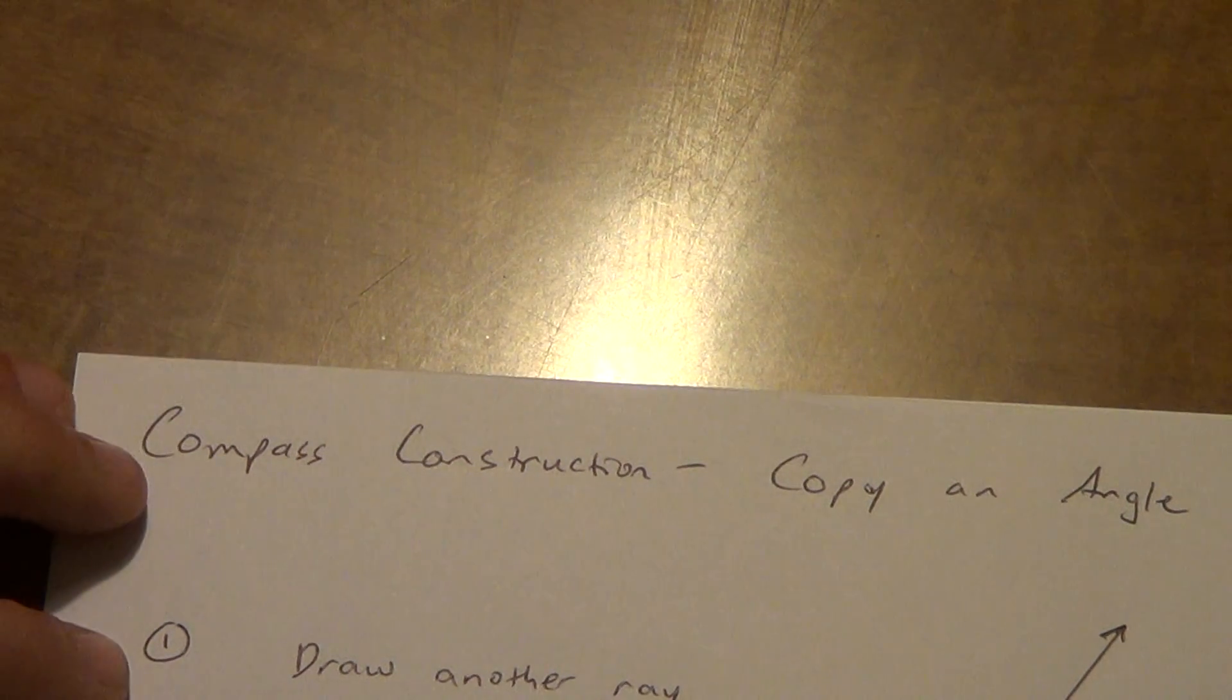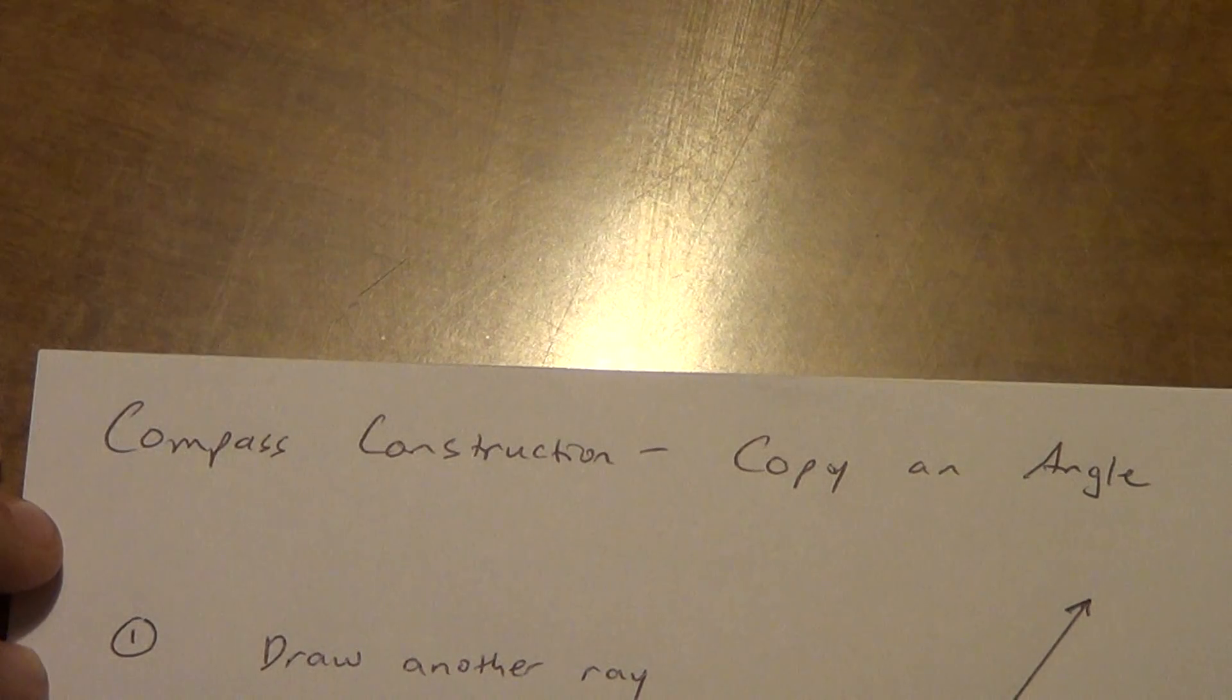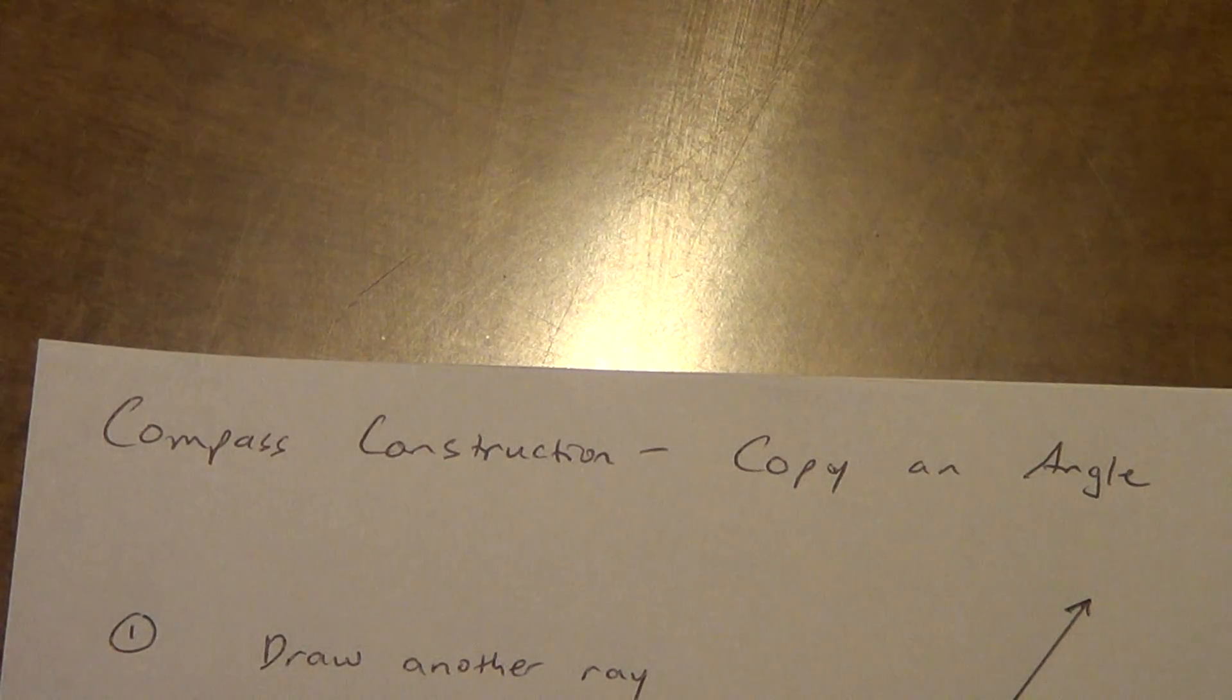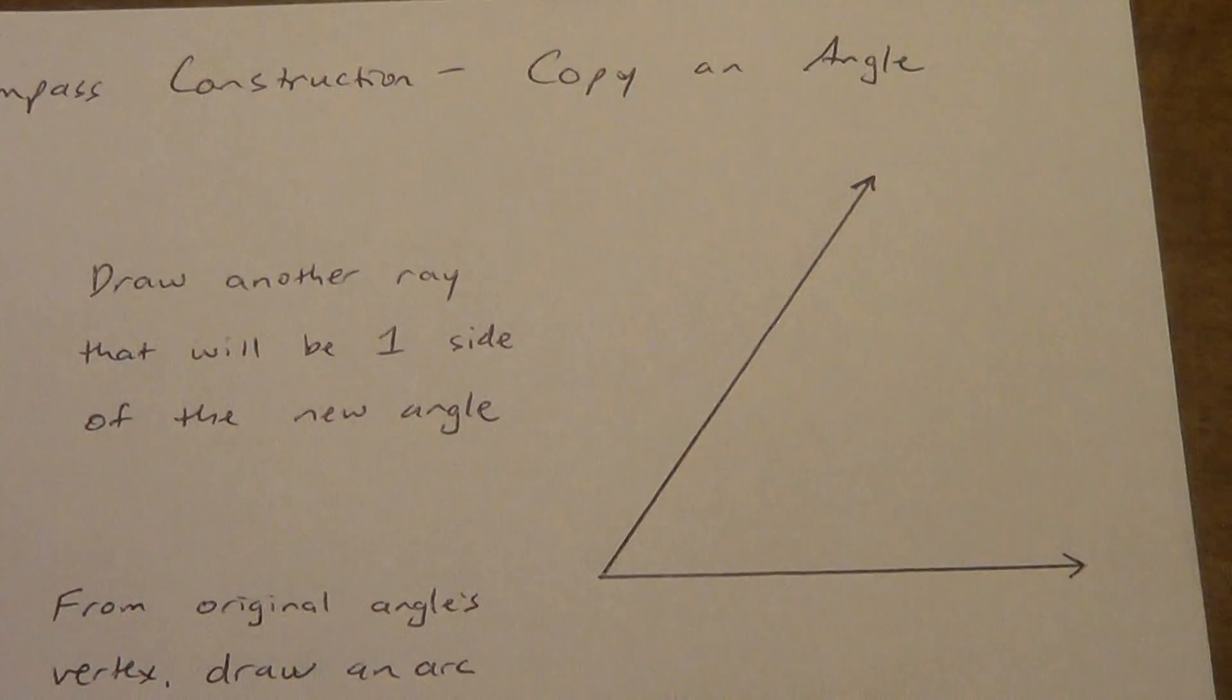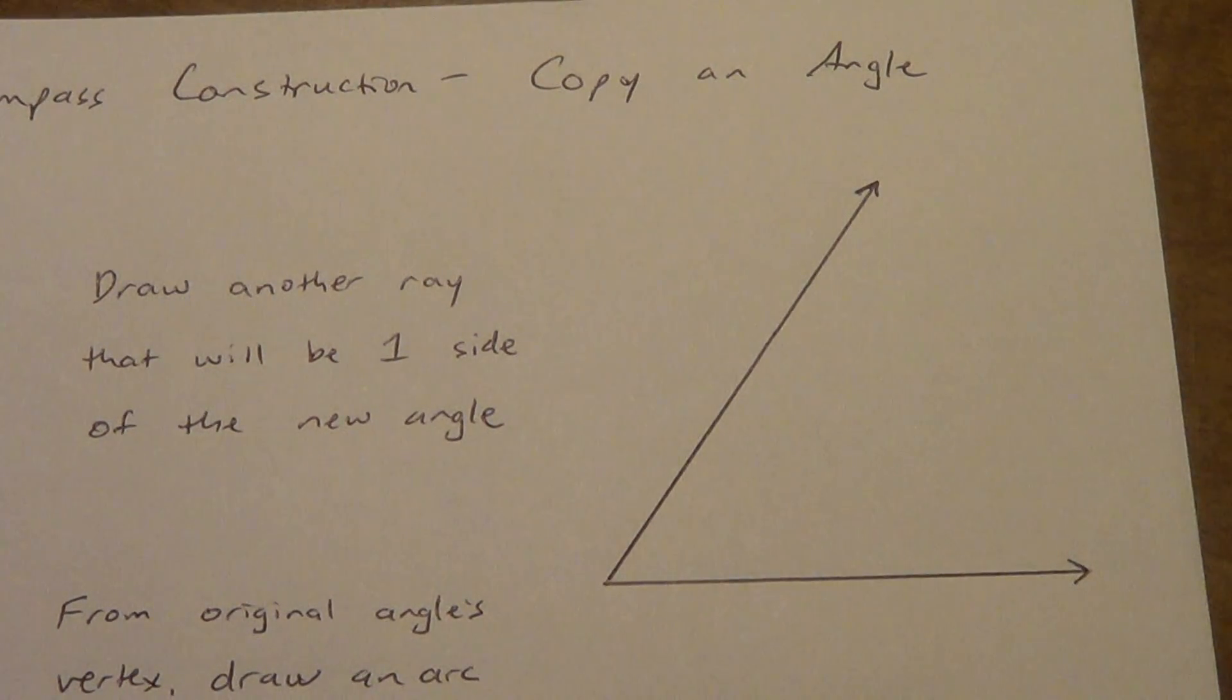You should still be able to do it correctly. We are going to copy an angle. That means I'm going to create another angle that looks just like this one. So you need to get an angle on your paper. Use your straight edge, get an angle on your paper, and then we're going to start with step one.